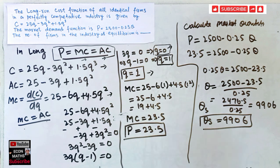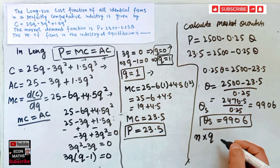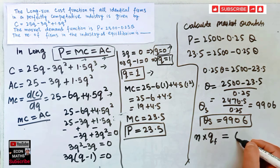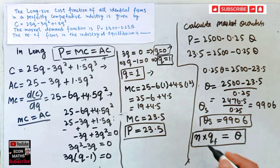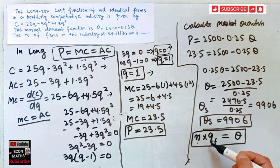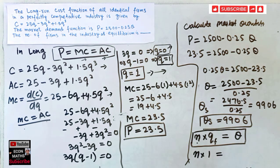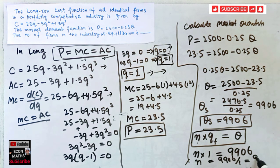Now we have to find the number of firms. The relationship is: number of firms × quantity supplied by the individual firm = total quantity. Since all firms are identical, each produces the same output level. So N × 1 = 9906, which means N = 9906 / 1 = 9906.